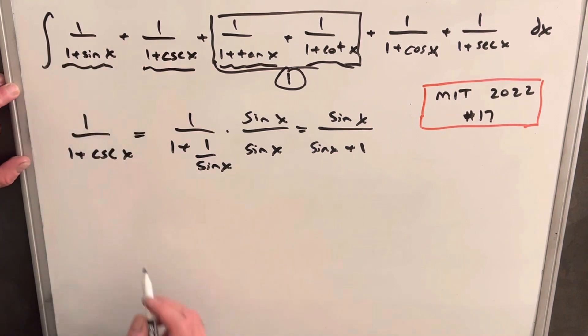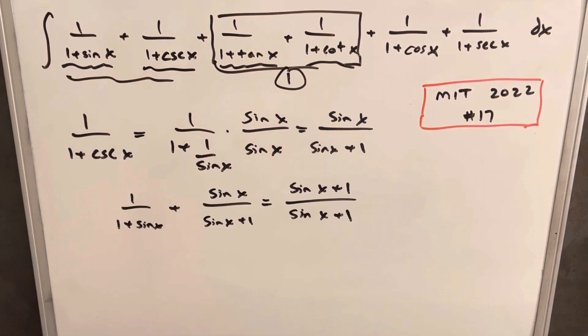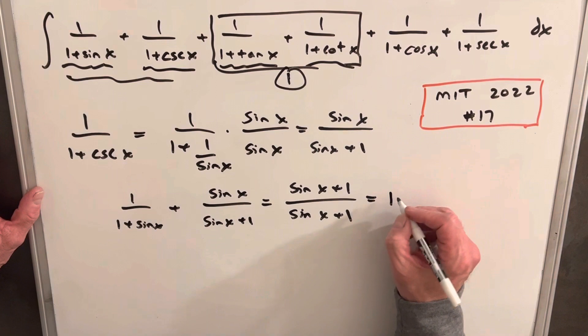Then we can look at this term right next door here and add these two together. Then when we add these first two terms together, we just get sine x plus 1 over sine x plus 1. And that's just going to be equal to 1 as well.